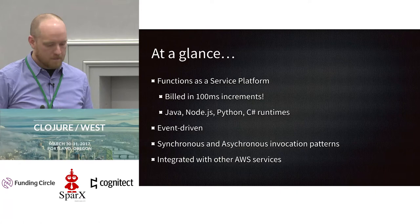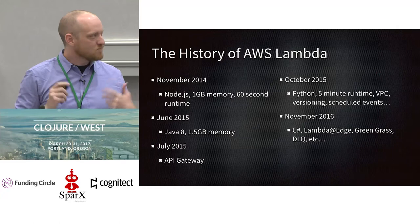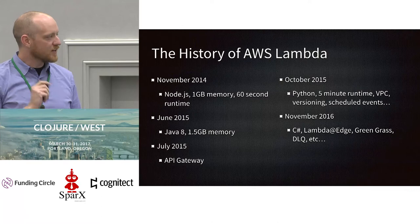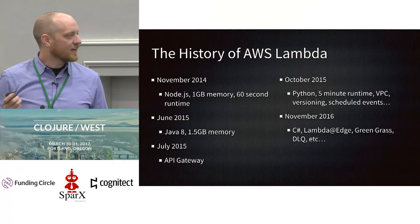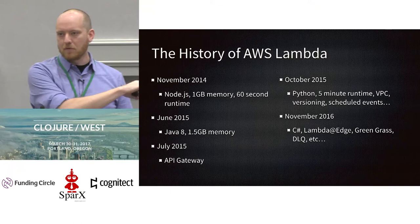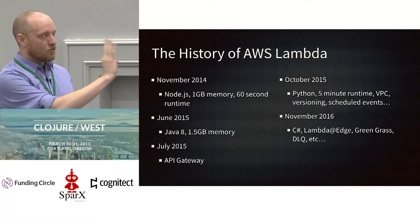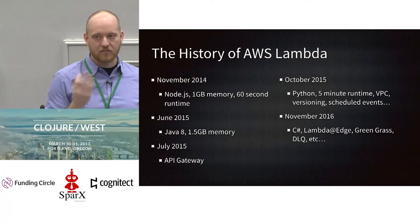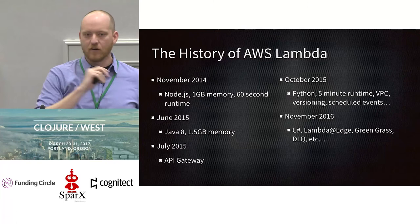Briefly about the history. Lambda is only about two and a half years old. In November 2014 we got Node.js, a gig of memory, and 60 seconds of runtime. A year later we got a Java runtime and — perhaps not coincidentally — more memory. Since then we've gotten steady improvements: API Gateway is a huge enabler to back mobile apps and APIs; we got Python, more runtime in October 2015, VPC support, versioning, and more. Every couple of weeks we get a new feature with either the Lambda platform specifically or some of the things around it.